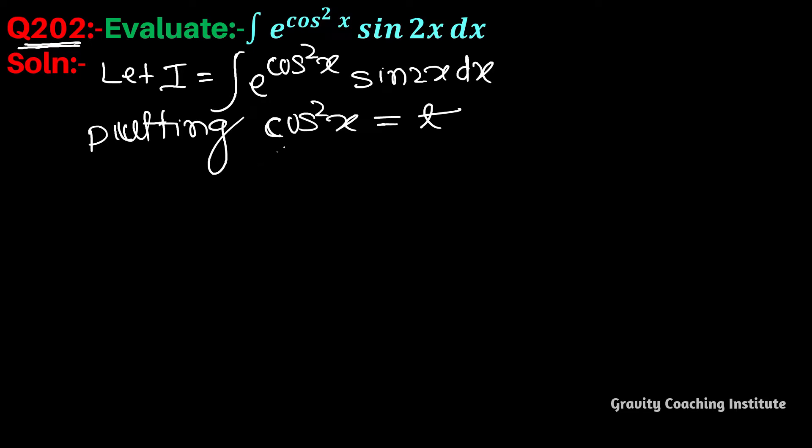Differentiating cos x, you get minus sine x. And this 2 cos x into sine x can be written as sin 2x.